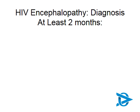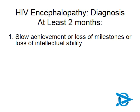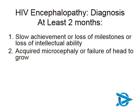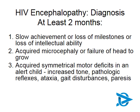How do we diagnose HIV encephalopathy in children? There are three major features to look at, and one of these needs to have been present for at least two months. Firstly, slow achievement or loss of milestones, or loss of intellectual ability — one has to ask for these specifically, especially in the ill child. Secondly, acquired microcephaly or failure of the head to grow, picked up through regular head circumferences or diagnosed with CT scan. Thirdly, acquired symmetrical motor deficits — increased tone, pathologic reflexes, ataxia, gait disturbances, or paresis. This will be a fairly end-stage picture of HIV encephalopathy.